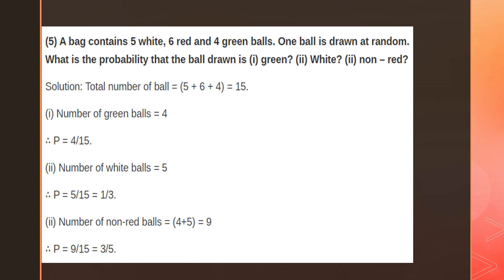The probability of getting a white ball equals the number of white balls divided by the total outcome, which is five divided by 15. The probability of getting a non-red ball: the total non-red balls can be either green or white, that is four plus five equals nine. So the probability of getting a non-red ball is nine by 15, which simplifies to three by five.